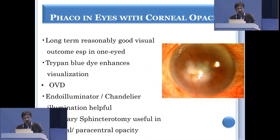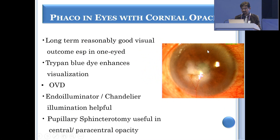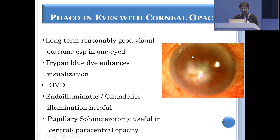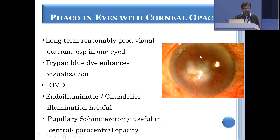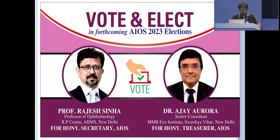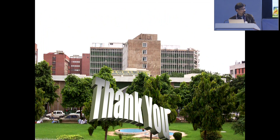In conclusion, in a case of opacity with a cataract — particularly if the cornea is vascularized, the risk of rejection is high, the patient cannot come for follow-up, and is one-eyed — you can do cataract surgery and enhance visualization by use of trypan blue dye, OVD on the surface, and endo-illuminator or chandelier illumination. If you have a clear cornea in the adjacent area, you can do a small sphincterotomy so as to provide a reasonably good visual outcome for the whole of the patient's life. Thank you very much for your patient listening.